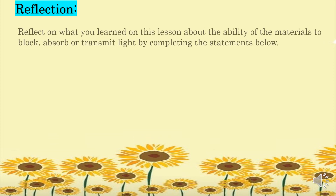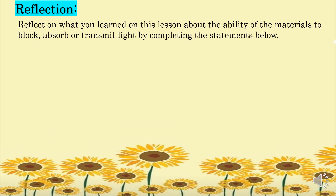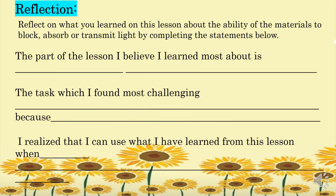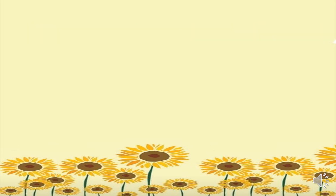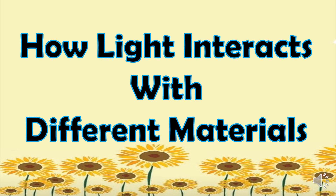For the reflection activity, reflect on what you learned about the ability of materials to block, absorb, or transmit light by completing the statements: the part of the lesson I learned most about is blank; the task I found most challenging is blank because blank; and I realized I can use what I learned from this lesson when blank. That concludes our lesson about how light interacts with different materials.